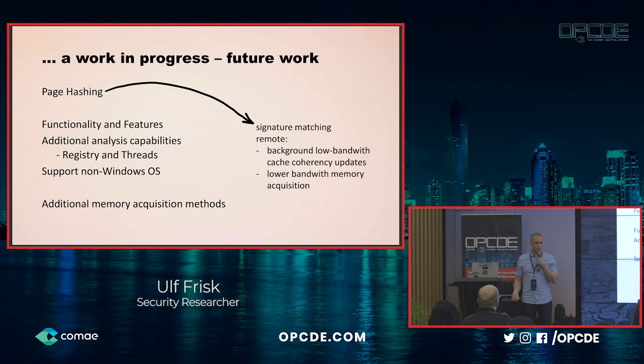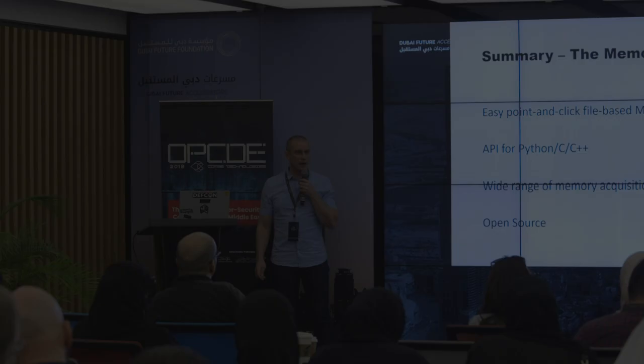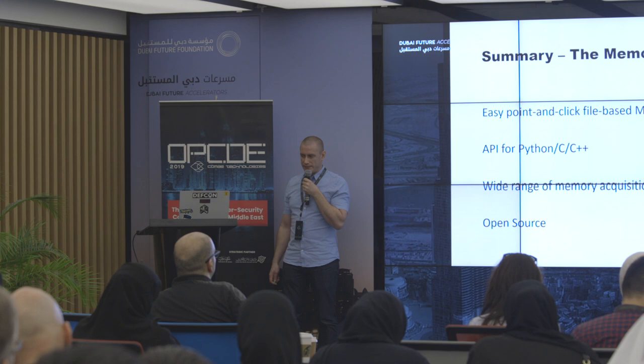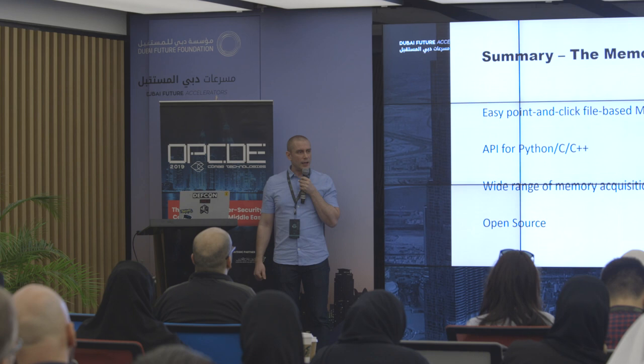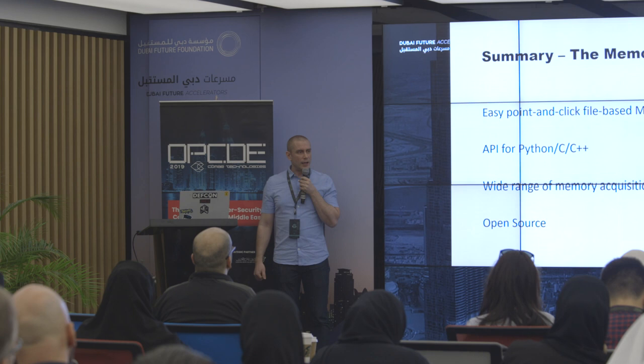Additional memory acquisition methods are always nice. To sum everything up: the Memory Process File System is an easy point-and-click, file-based memory analysis tool. It comes with an API for C, C++, and Python. It has a wide range of memory acquisition methods — not just hardware-based ones, but software-based ones and this remote agent as well. It's 100% open source and found on my GitHub. Thank you very much.